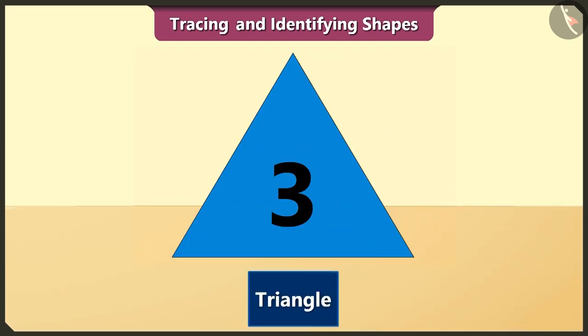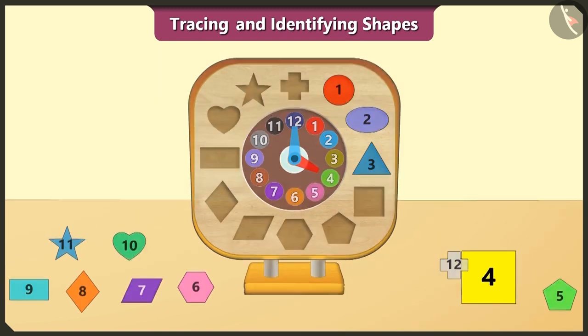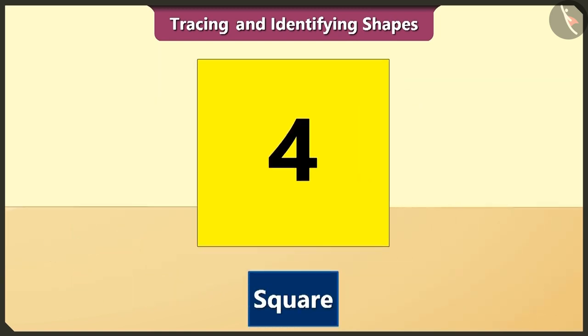The triangle is third in order. A triangle has three sides. The square is fourth in order. The length of all its four sides are the same.